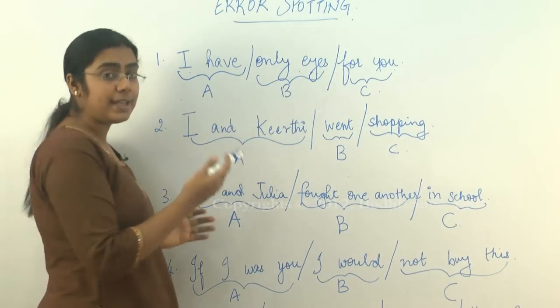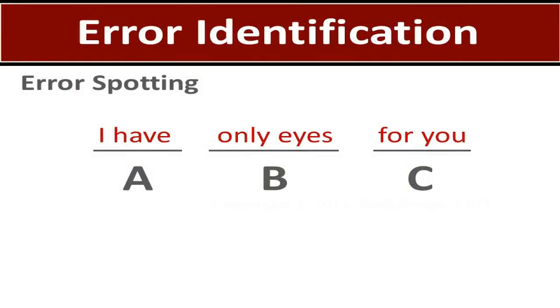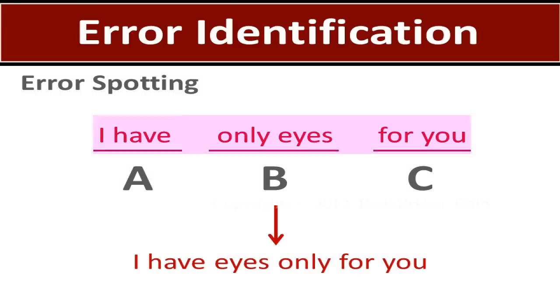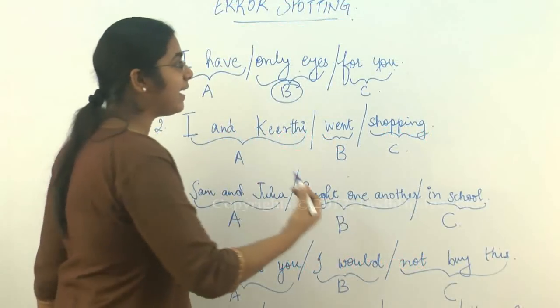So the right form, the correct form of this sentence would be: I have eyes only for you. So there is a difference between I have only eyes for you and I have eyes only for you. So B is your answer.